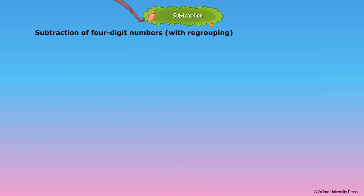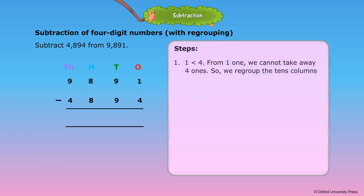Subtraction of 4-digit numbers with regrouping. Subtract 4,894 from 9,891. Step 1: 1 is less than 4. From 1 one, we cannot take away 4 ones, so we regroup the tens column. It will then be 11 ones minus 4 ones is equal to 7 ones.